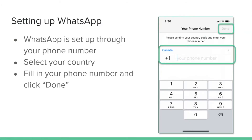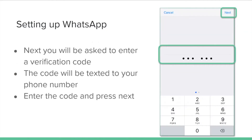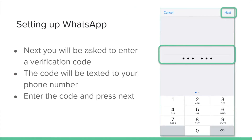WhatsApp is set up through your phone number. Select your country and fill in your phone number, then click Done. You will then be asked to enter a verification code that will be texted to your phone number. Enter the code and press Next.